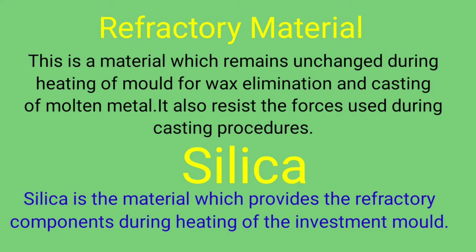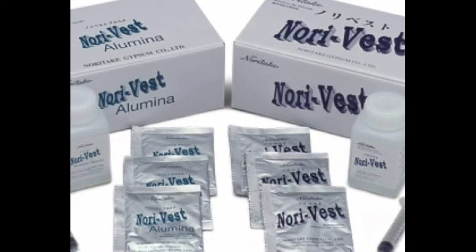Requirement 5 — Refractory material: This is a material which remains unchanged during heating of the mold for wax elimination and casting of molten metal. It also resists the forces used during casting procedures. Silica is the material which provides the refractory components during heating of the investment mold. Here you can see the refractory material.